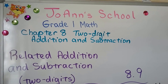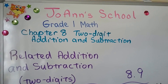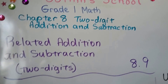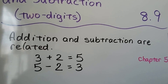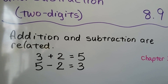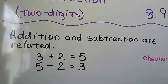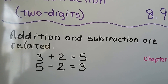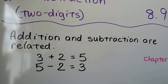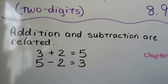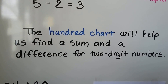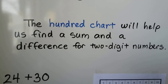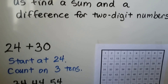Related Addition and Subtraction for Two-Digit Numbers, Lesson 8.9. Addition and subtraction are related — we learned that back in Chapter 5. For example, 3 plus 2 is equal to 5, so if we have 5 and take away 2, it brings us back to 3. Those are related facts, like a fact family. The 100 chart will help us find a sum and a difference for two-digit numbers — we can have related facts for two-digit numbers.